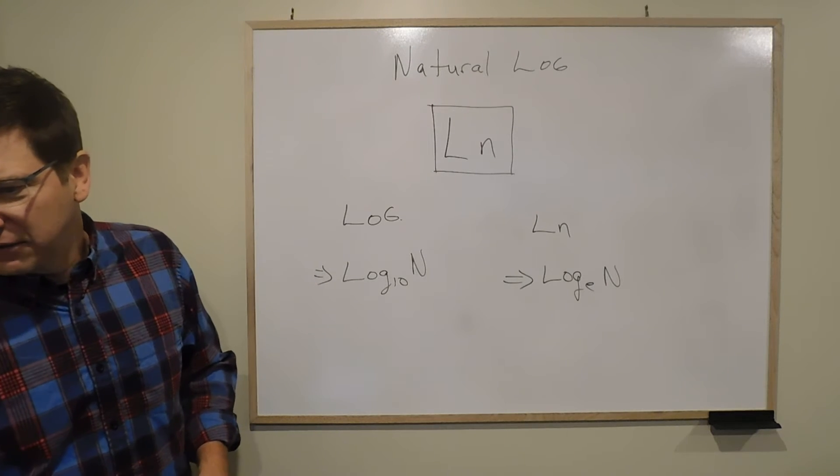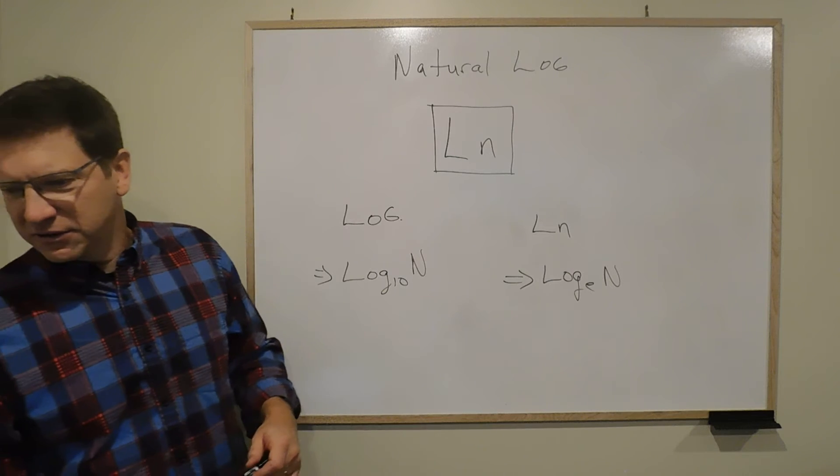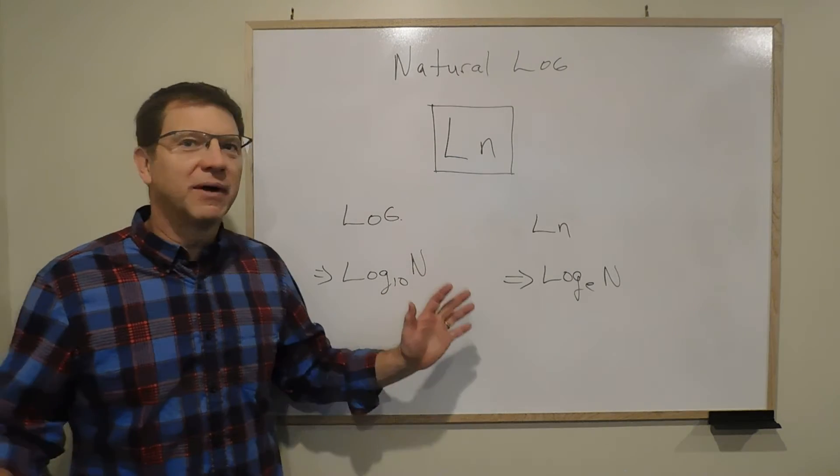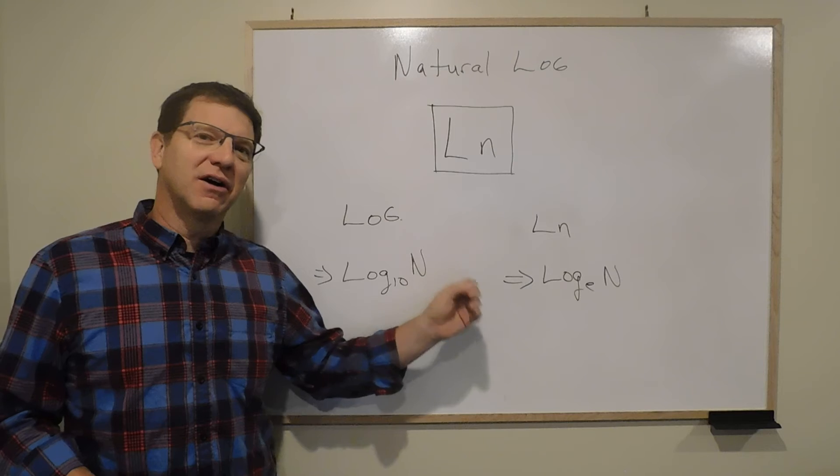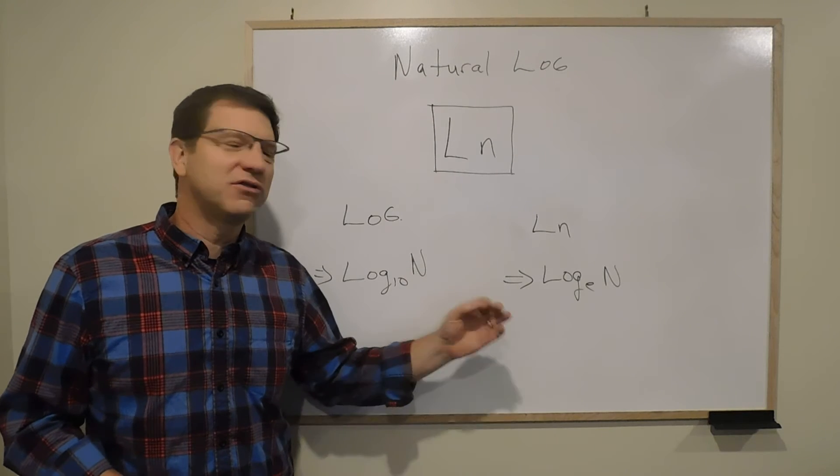You know, 2.718281828459045235. You're like, whatever. But it's like pi. It's a non-terminating, non-repeating decimal, but it doesn't change.